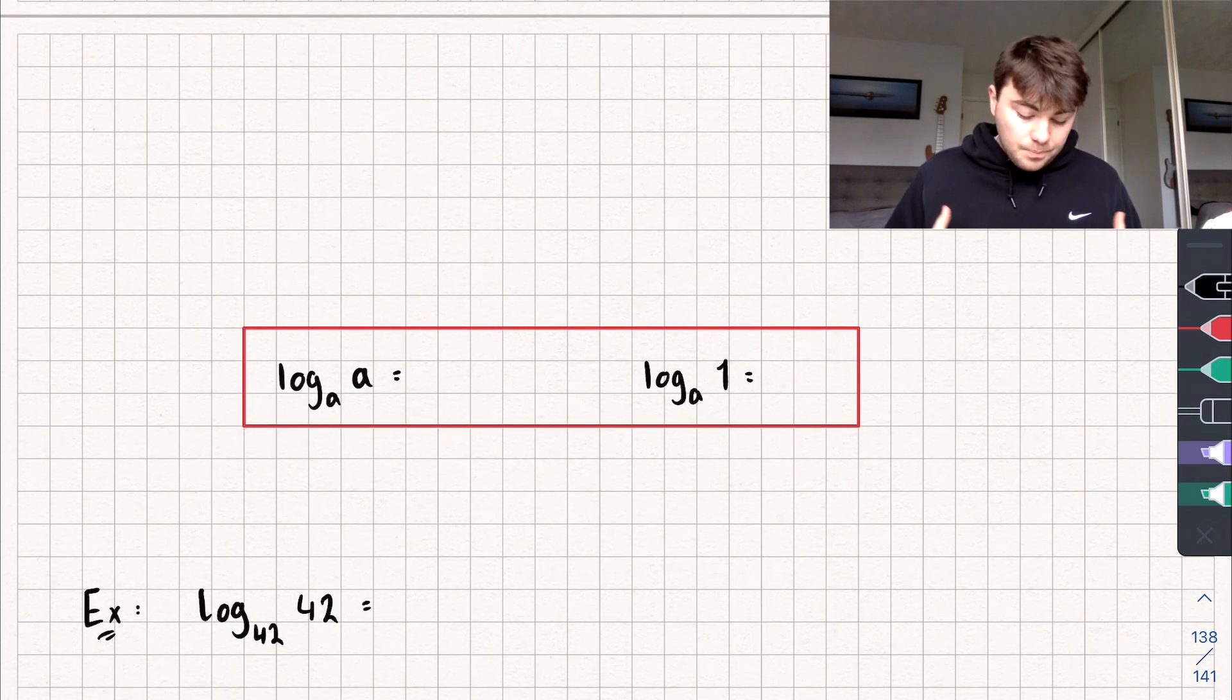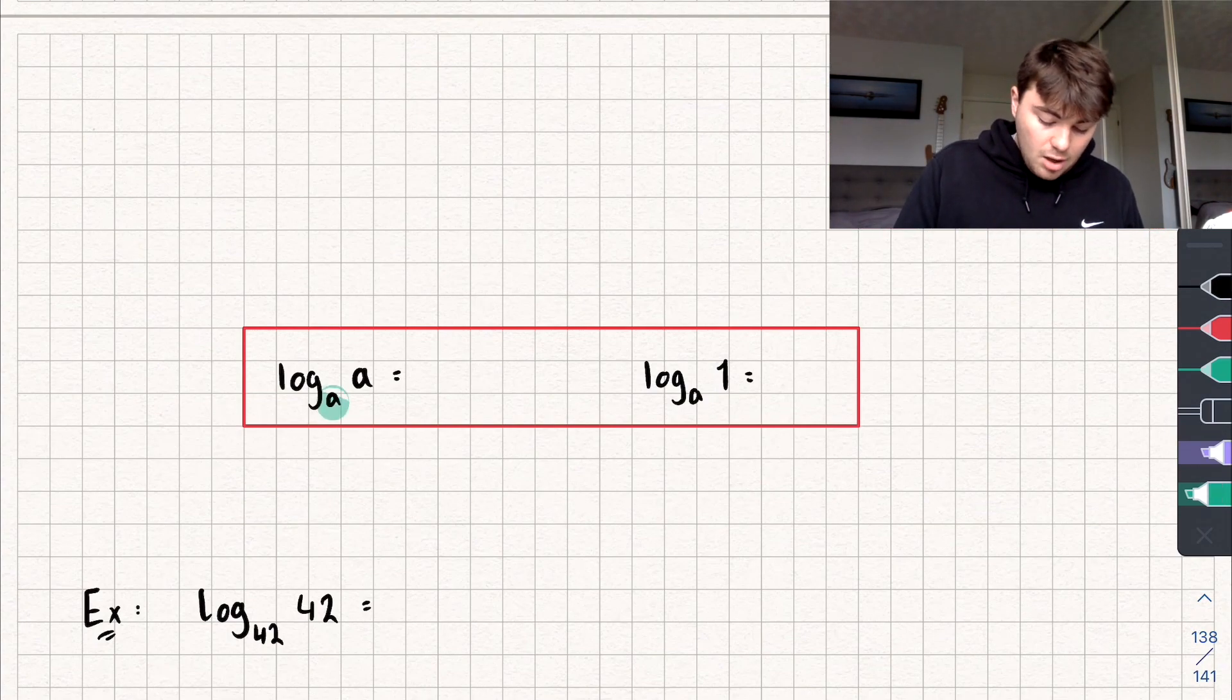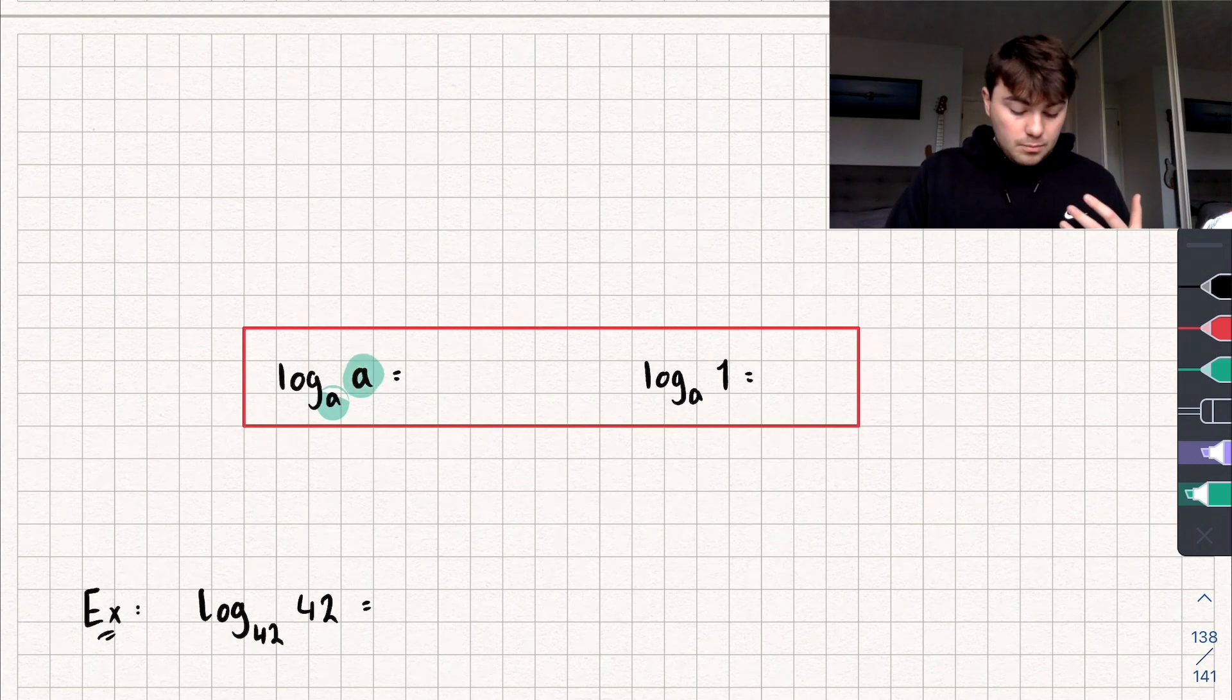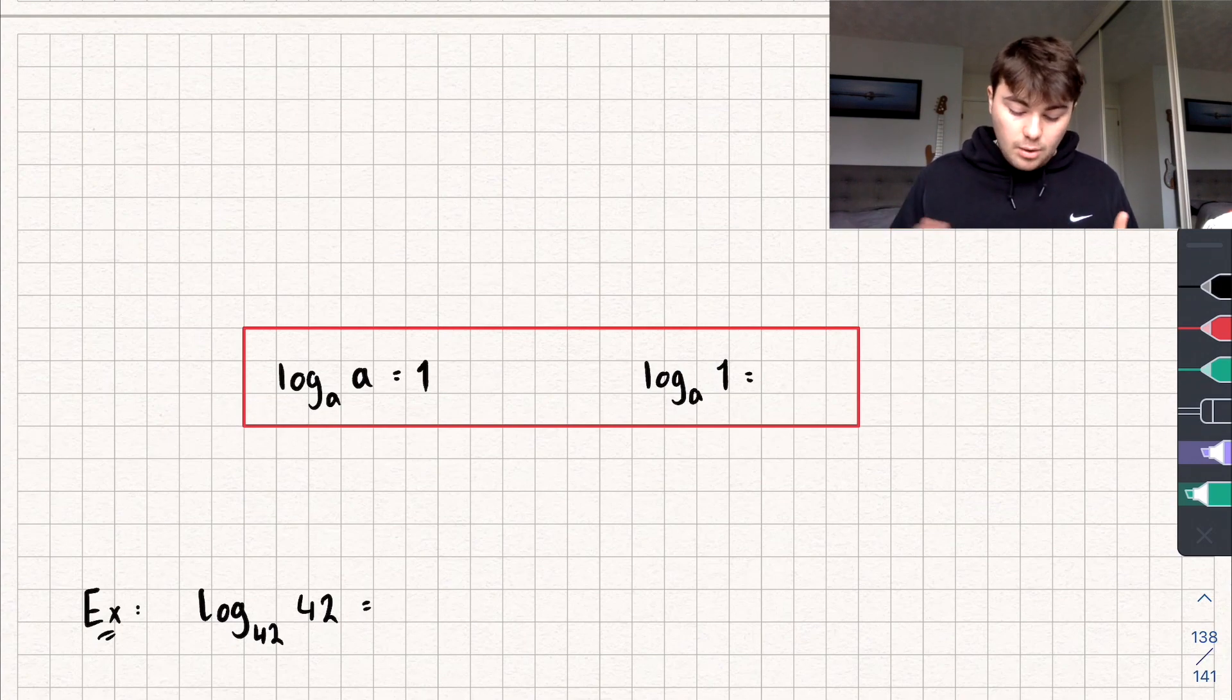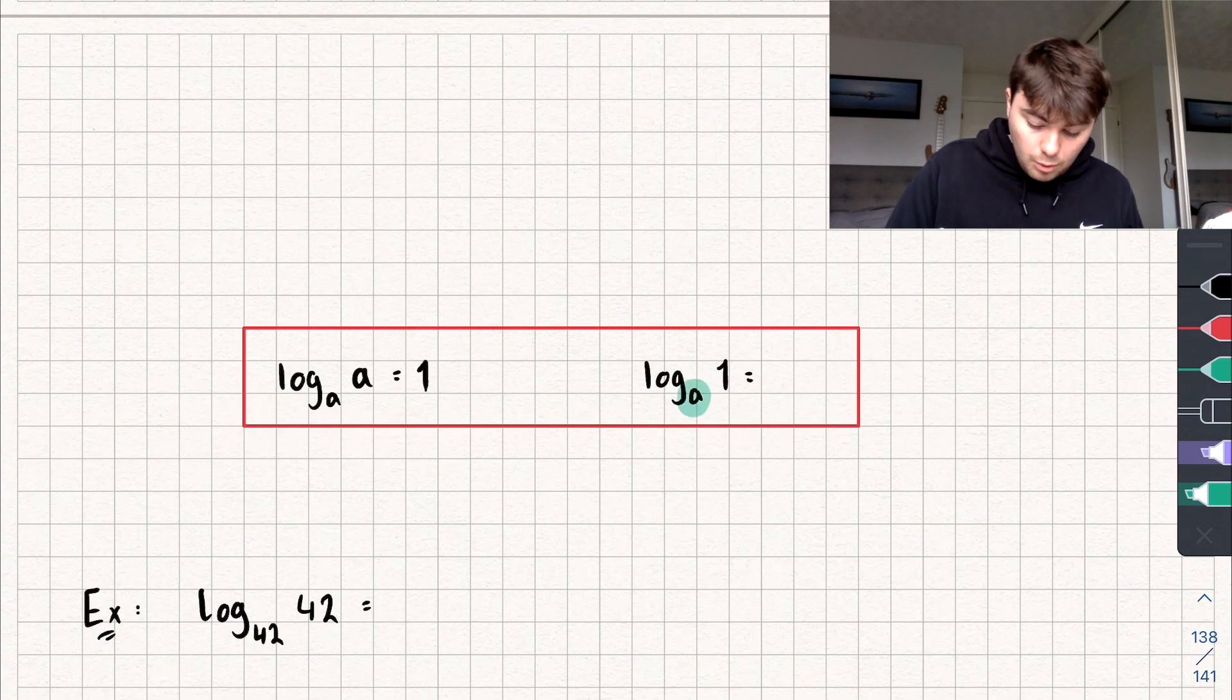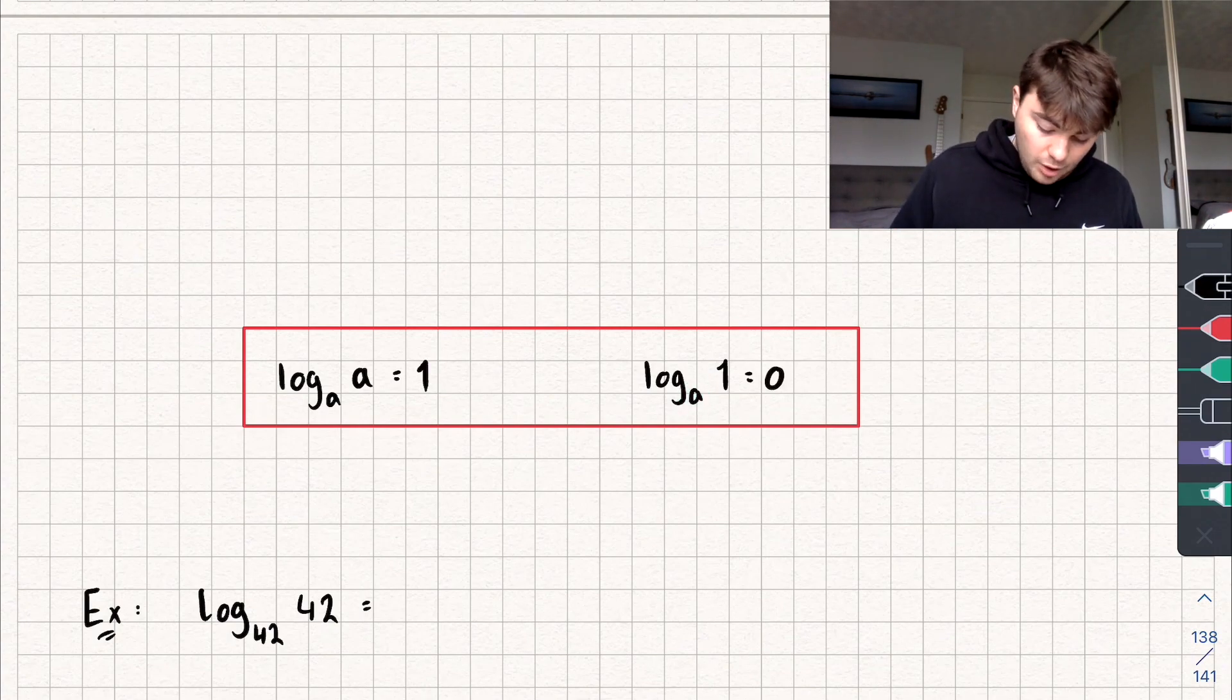Now let's look at two more little things we can find about logs quickly. If we're taking the logarithm of a in base a, well what's that equal to? This is just asking me what do I put a to the power of to give me a? Well, that's pretty easy, I put a to the power of one. We can also answer this second one which says if I've got the logarithm of one base a, what's the answer? What do I put a to the power of to give me one? Well, that's going to be zero.